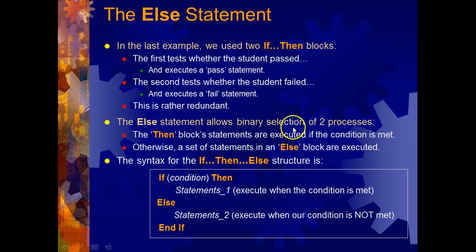The else statement allows binary selection of two processes. Binary means you can go either this condition versus every other condition. So if this is true, this executes. If it's not true, every other possible case, then this executes.